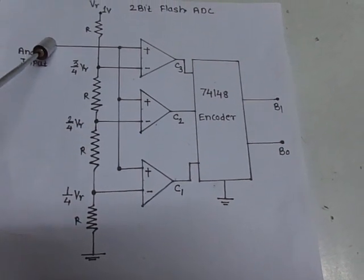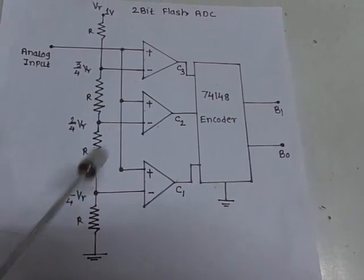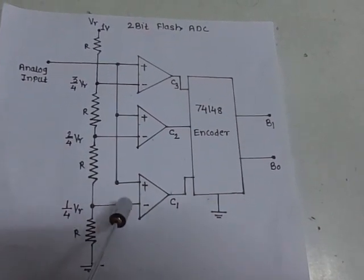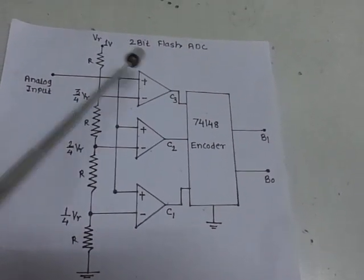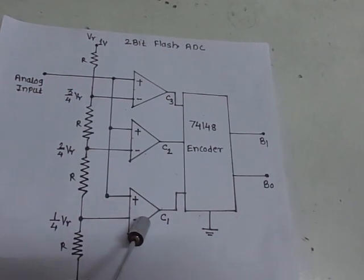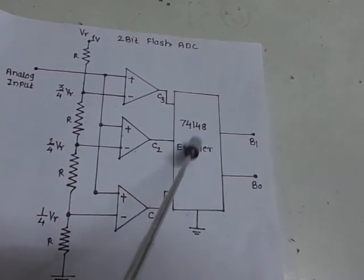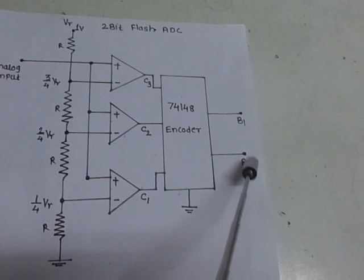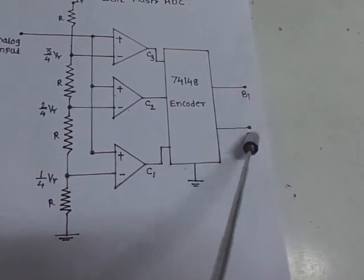We are going to apply the analog input signal here, and according to the input signal at the positive terminal of the op-amp, the output of the comparator will be set to a high or low value. This is then applied to the 7148 decoder, where at the output side we get a 2-bit digital output.